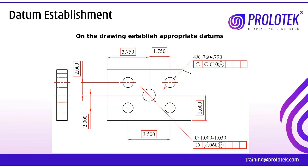That is why this order of precedence is very important to understand. To understand this order of precedence and to establish datums, we will take one example. In this example we have to identify three datums and then allocate three datums to make five holes — a center hole of one size and four holes of another size. This is the exercise I usually give to my training participants. The common mistake most of them make is: they take this surface as primary datum A and they take the two side surfaces as B and C.